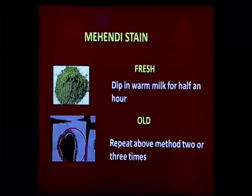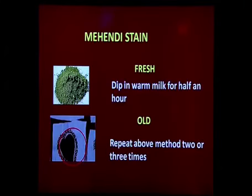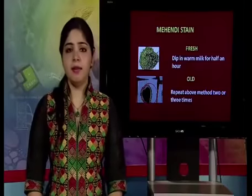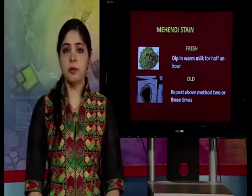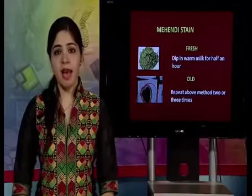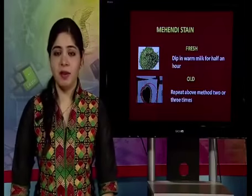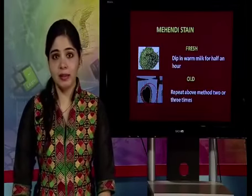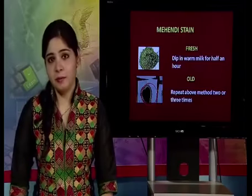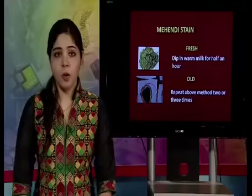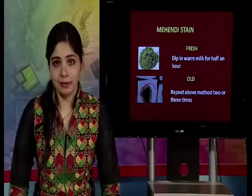The last stain is a mehndi stain. This procedure can be used for all fabrics — dip in warm milk for half an hour. If the stain is old, repeat the method two or three times. These ingredients are easily available; you can get methylated spirit from a chemist's shop and use cotton balls to rub stains. We have learned about different types of stains — vegetable stains like tea and pickle stains, animal stains from egg, meat, and blood — and how to remove all of them. Thank you.